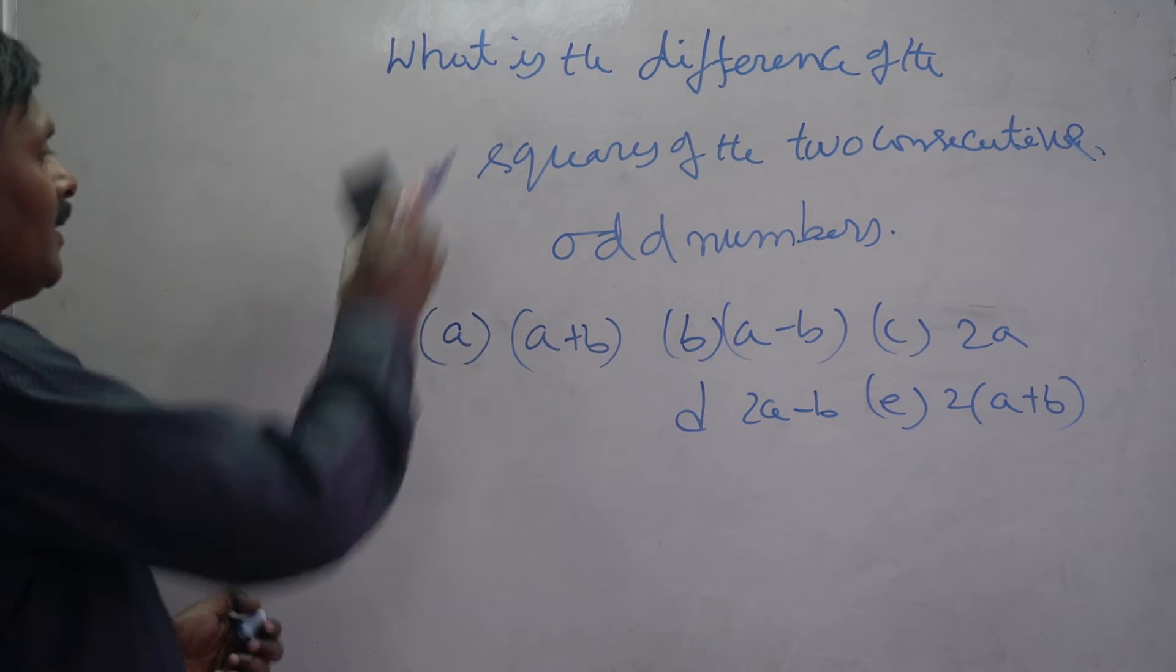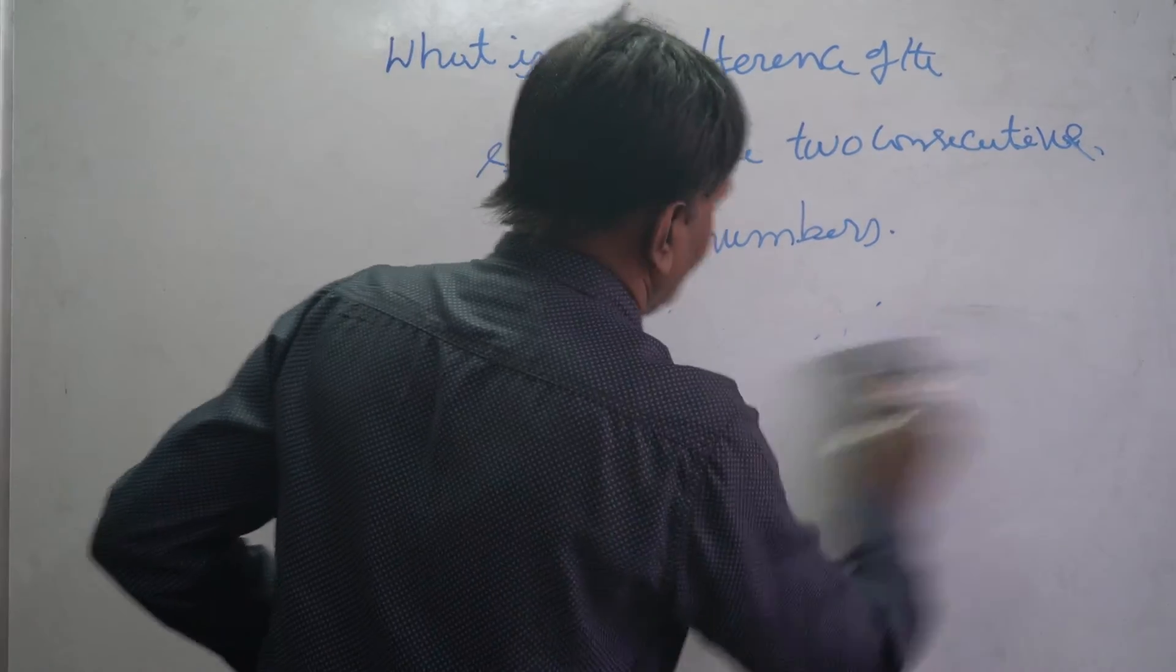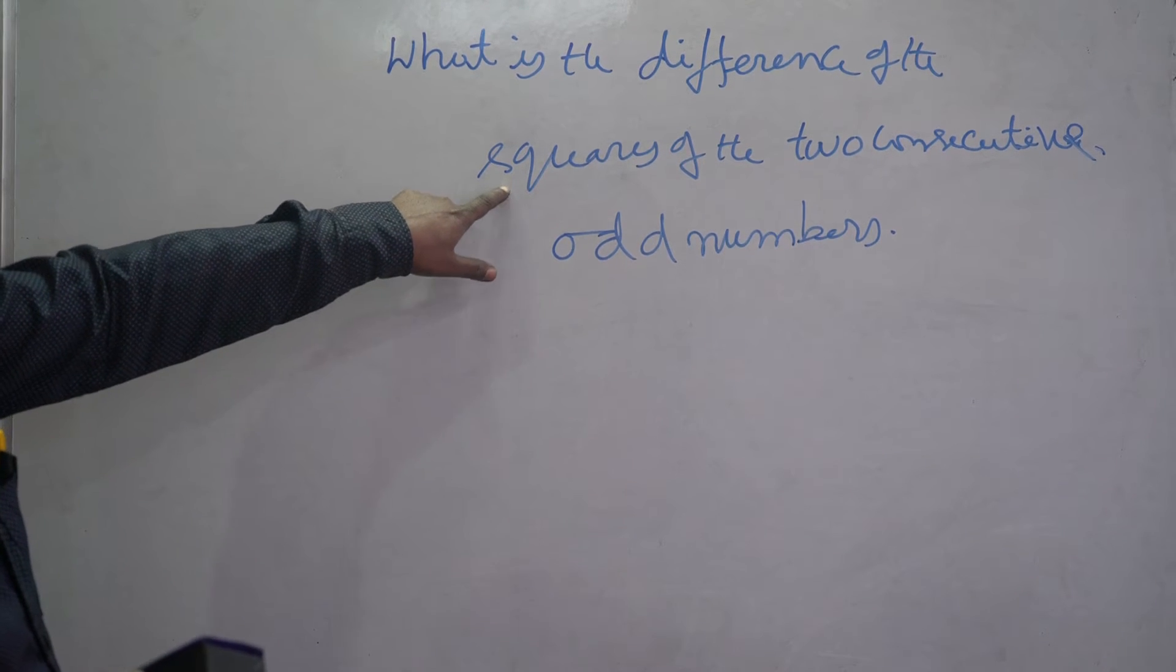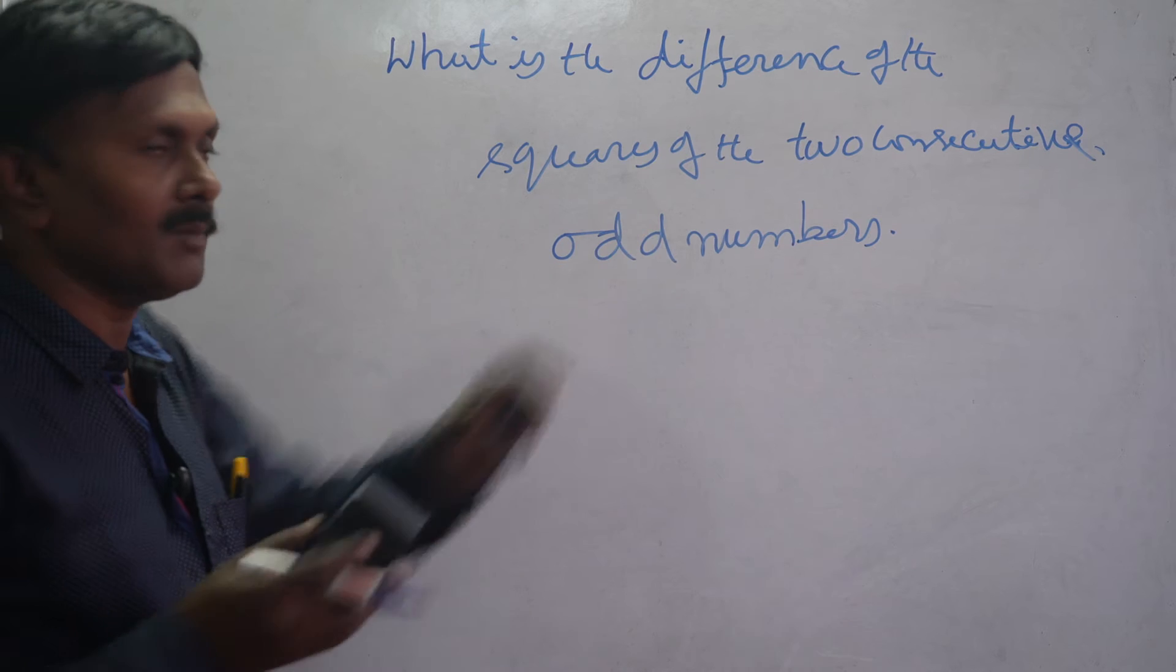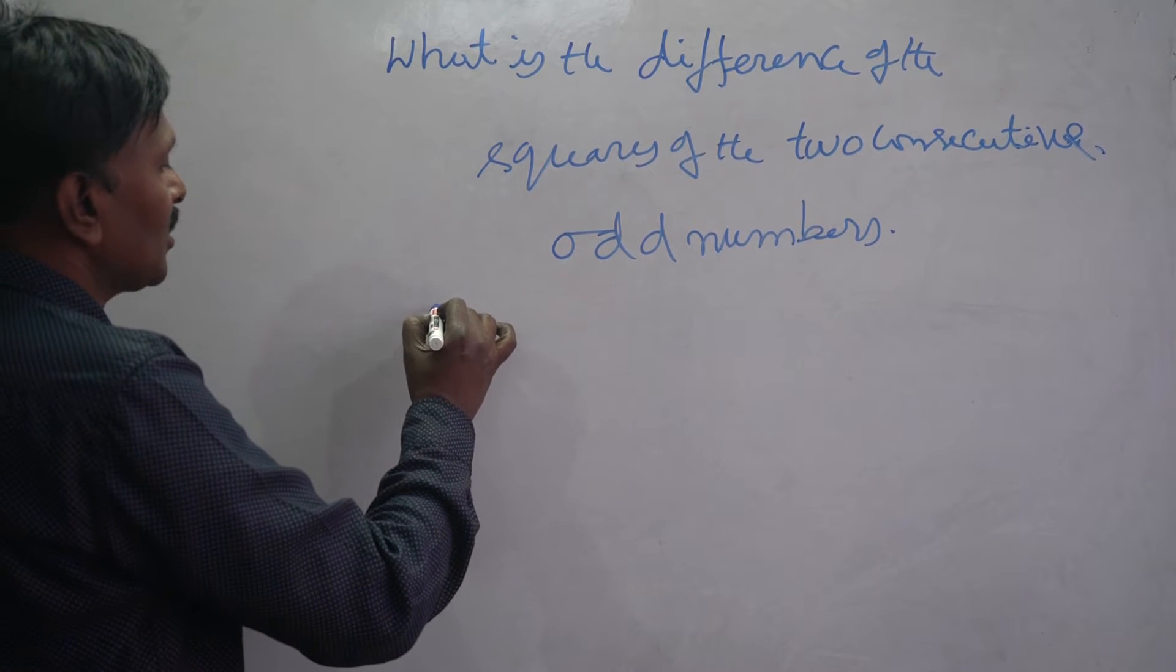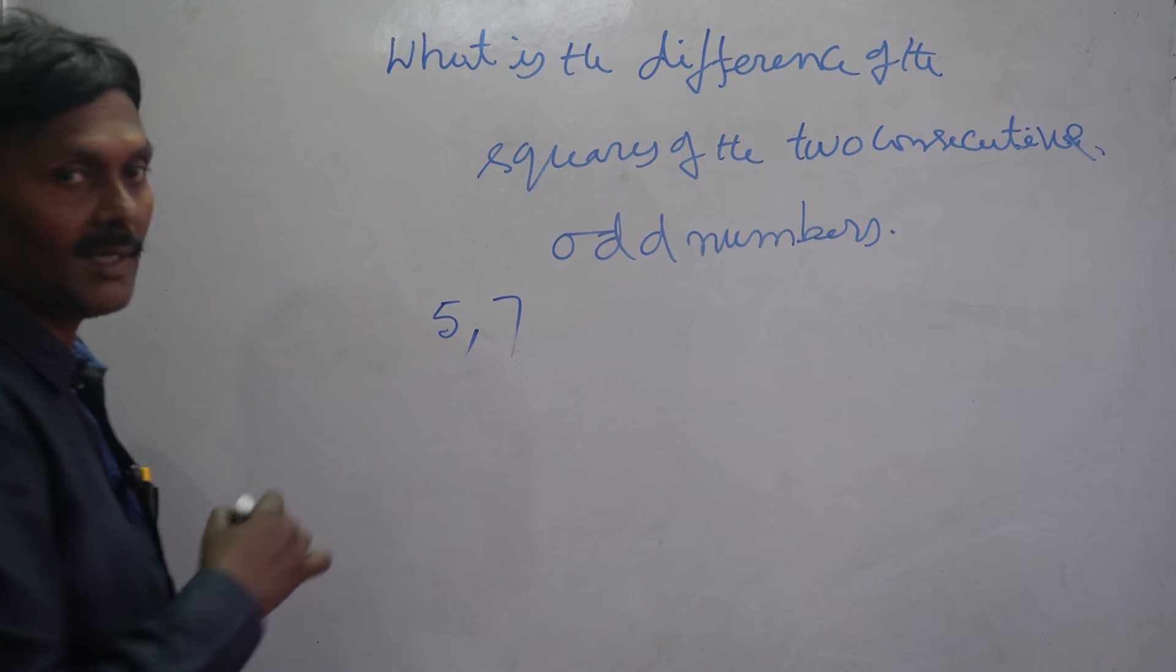How to do the problem? What is the difference of the squares of the two consecutive odd numbers? Two consecutive odd numbers - you take 5, 7.